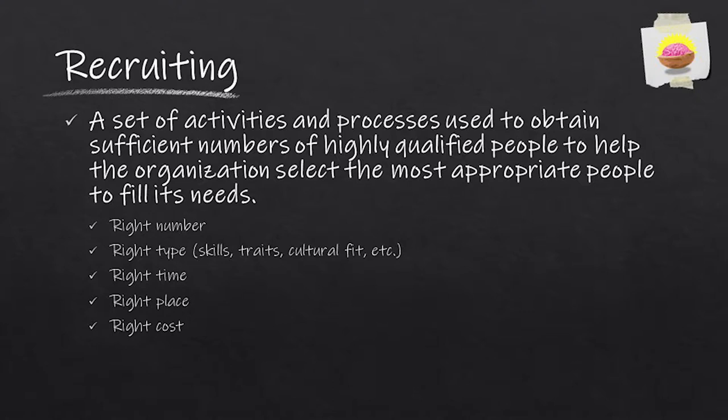So ultimately, what does that mean? Well, the organization has objectives it wants to meet, both short-term and long-term, and so it needs the right number of people, with the right type of skills, at the right time, in the right place, at the right cost. You need systems and processes in place to help you weigh and balance those needs so you can get the best possible combination for your organization.